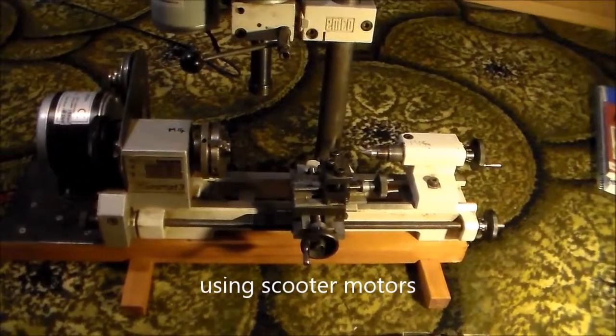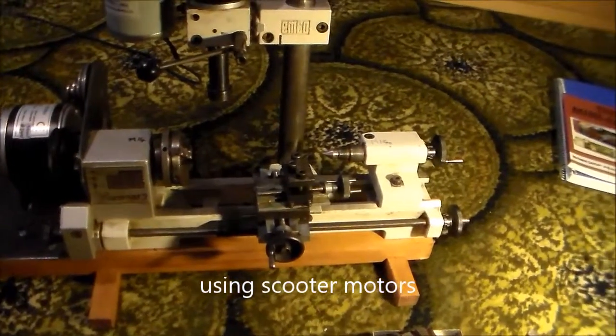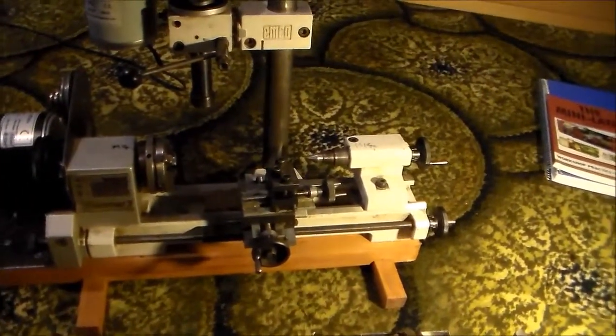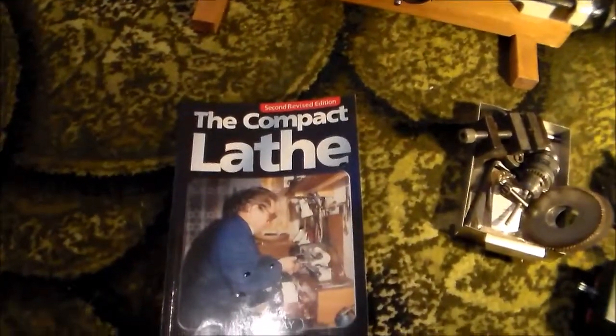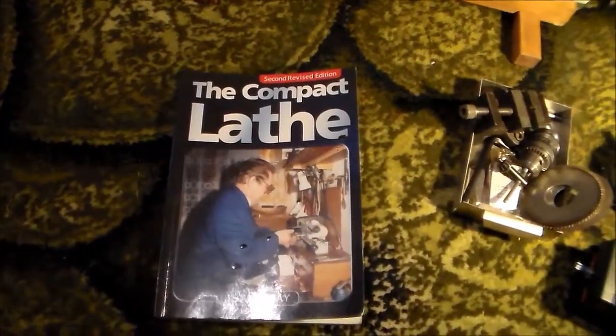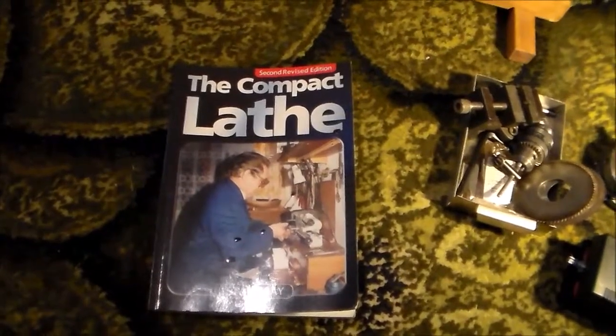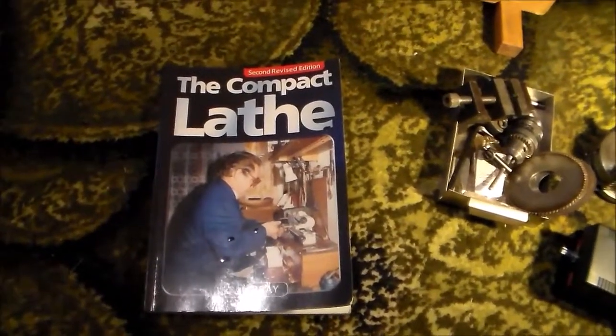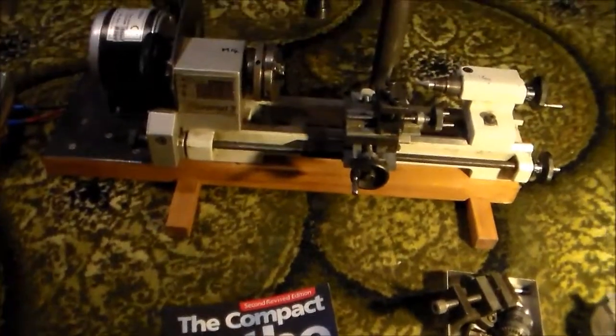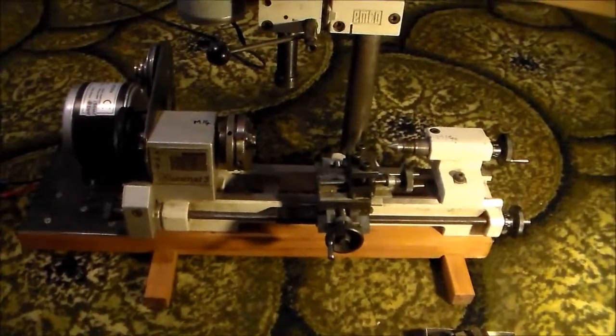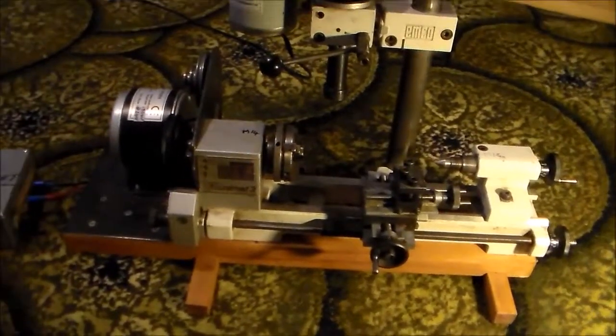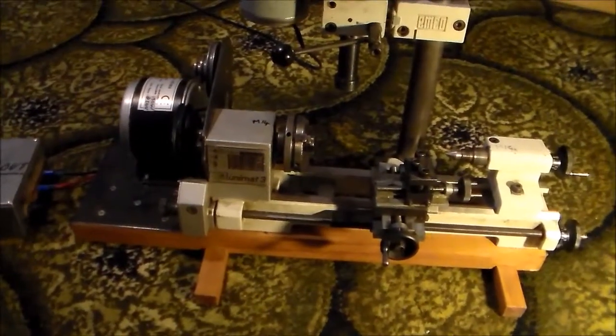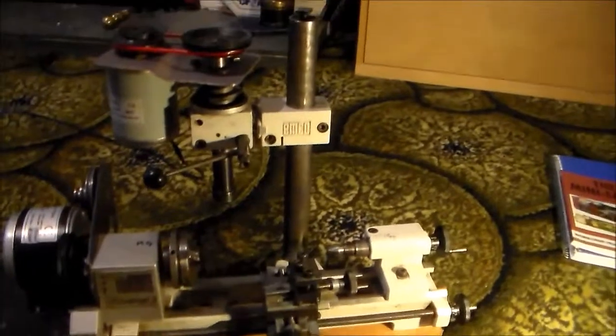The Emco Unimat 3 and Unimat 4 are small lathes, might be called micro-lathes. In one book here which mentions it, but it's mostly about the Toyo 210, it's classed as a compact lathe. The original lathe comes with one of those main motors and you have to swap the motor between the lathe operation and the milling operation.